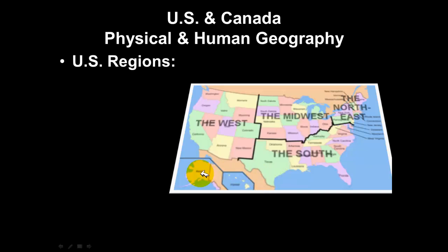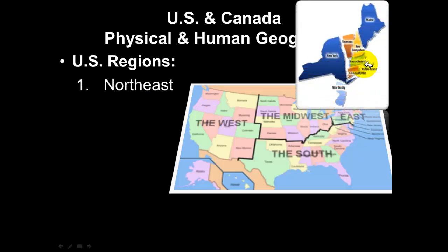When we talk about the regions of the United States, there are four major regions: the Northeast, the Midwest, the South, and the West. The Northeast was where the first states were founded, and generally the largest cities are found there. States like New York, Vermont, New Hampshire, Maine, Connecticut, Massachusetts, and New Jersey — a lot of the original 13 colonies — make up the Northeast. It is the wealthiest and oldest part of the nation.